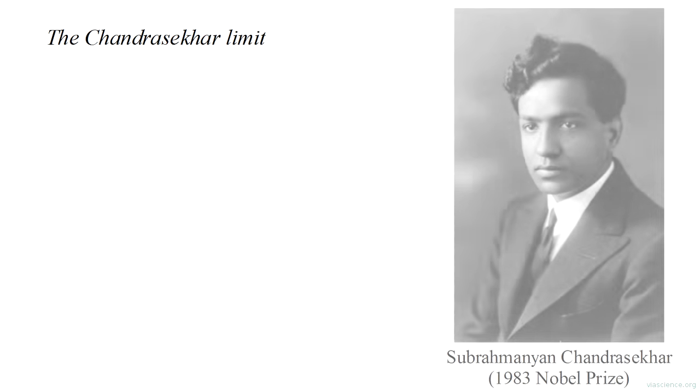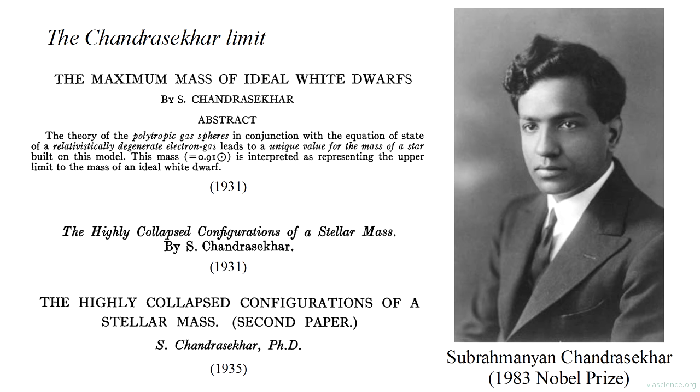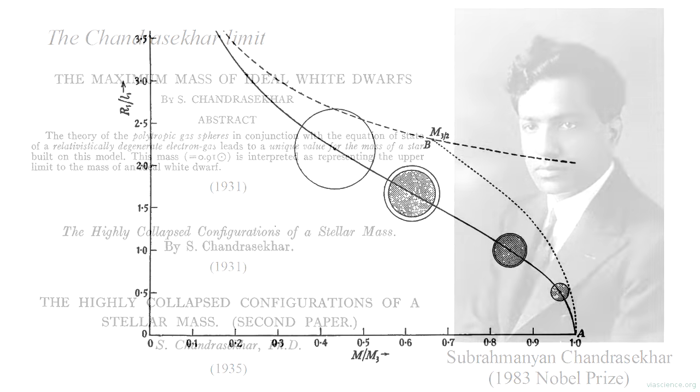This phenomenon is called the Chandrasekhar Limit, after Subramanian Chandrasekhar, who derived it rigorously in a series of papers starting in 1931. He was able to solve for the ultimate radius of a star as a function of its mass, and showed that this radius is zero if the mass exceeds a certain limit. Current calculations set this limit at about 1.4 times the mass of our sun.